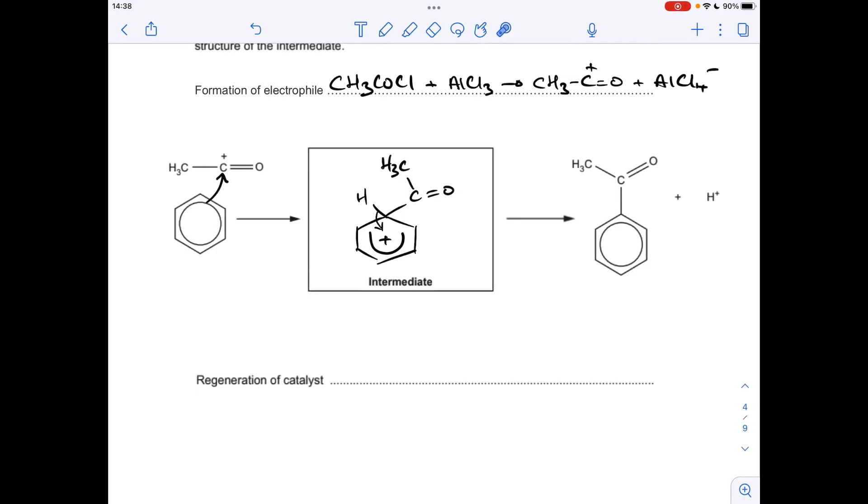And then the final thing we need to do is just show the role of the AlCl3. We're told it's acting as a catalyst, so we need to basically get it back. So the way we do that is we go for the AlCl4- ion, which was formed in the first step. We take the H plus that's just been kicked off that benzene ring. That's going to generate an HCl molecule and the catalyst is reformed.